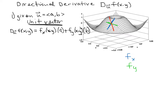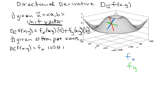Another way to find a directional derivative is if you're given an angle theta from the positive x-axis. Then the directional derivative equals the partial of f with respect to x times cosine of theta, plus the partial with respect to y times sine of theta. This works because if you take that unit vector u where theta is measured from the positive x-axis, cosine and sine for a and b pop right out of that triangle.